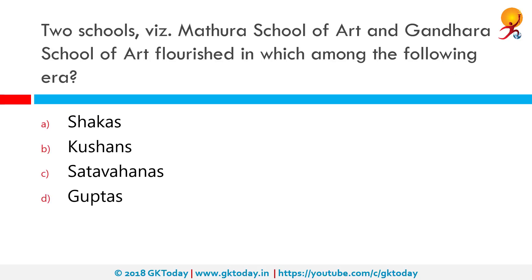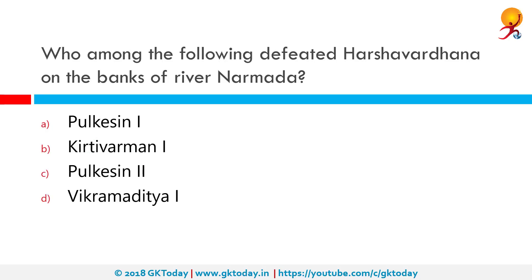Two schools — the Mathura School of Art and the Gandhara School of Art — flourished during the Kushan period. Who among the following defeated Harshavardana on the banks of river Narmada? Harshavardana was defeated by Chalukya king Pulakeshin II in circa 615 AD on the banks of river Narmada. This was the most notable military achievement of Pulakeshin and it ended Harsha's influence south of the Narmada river, establishing this river as the boundary between Uttarapatha and Dakshinapatha. So the correct answer is Pulakeshin II.